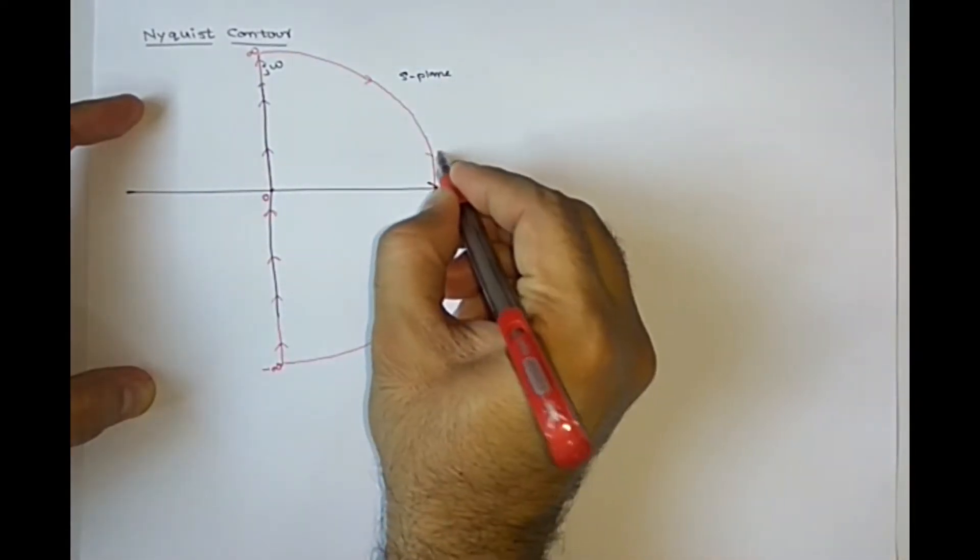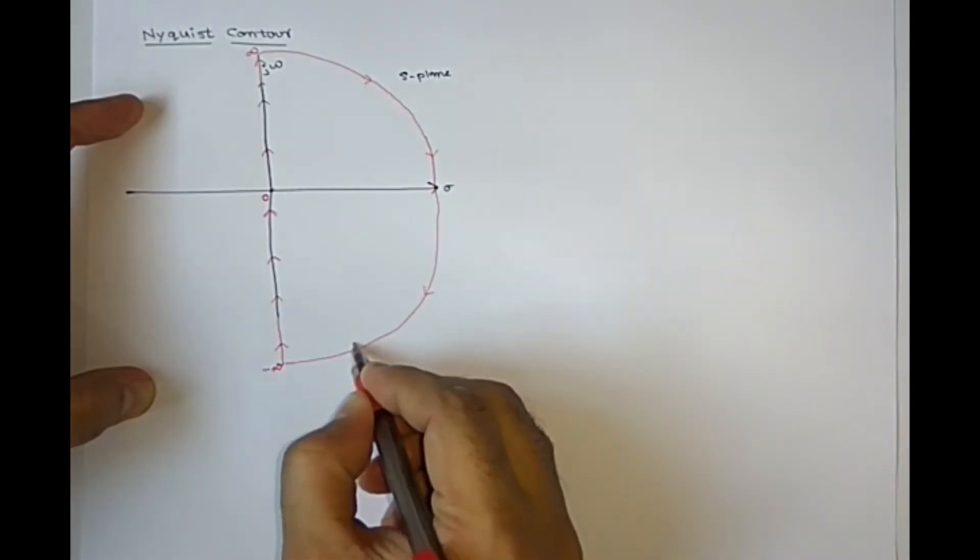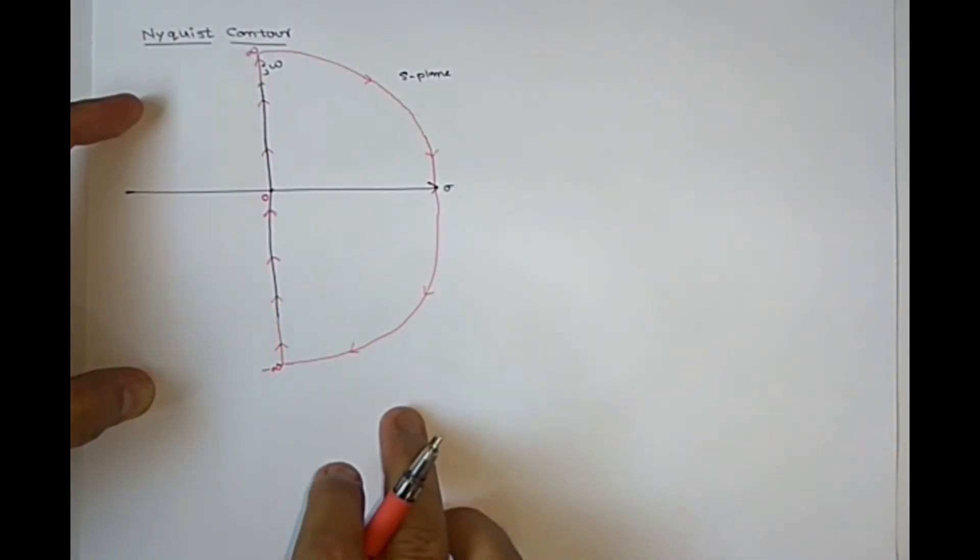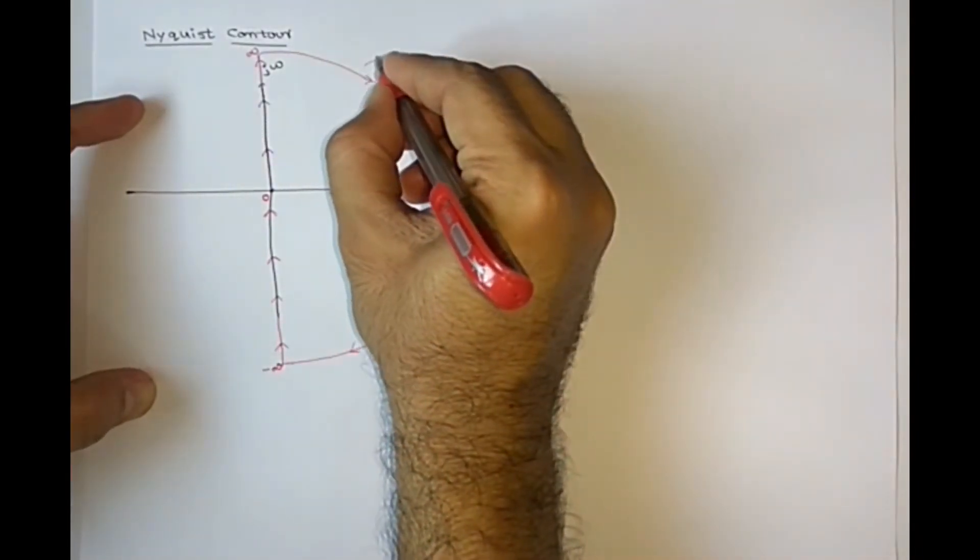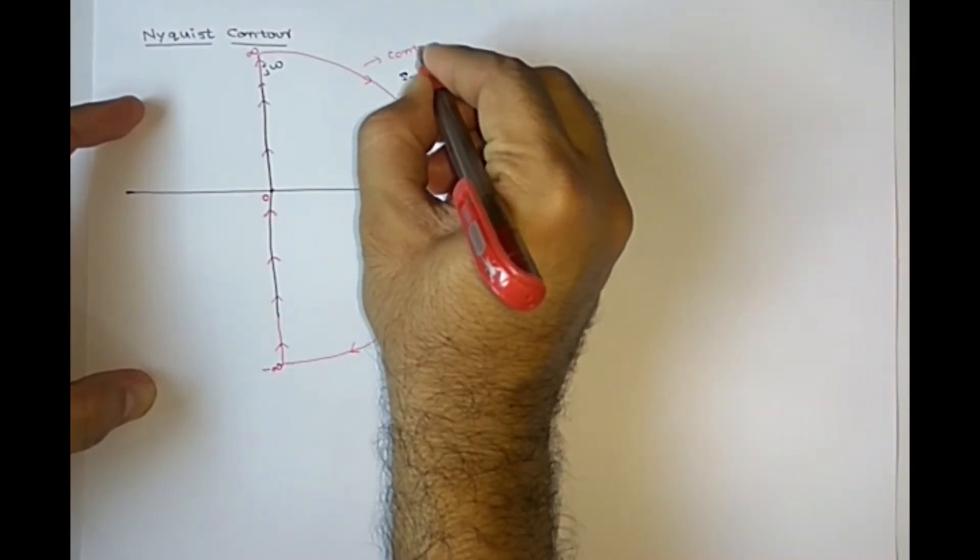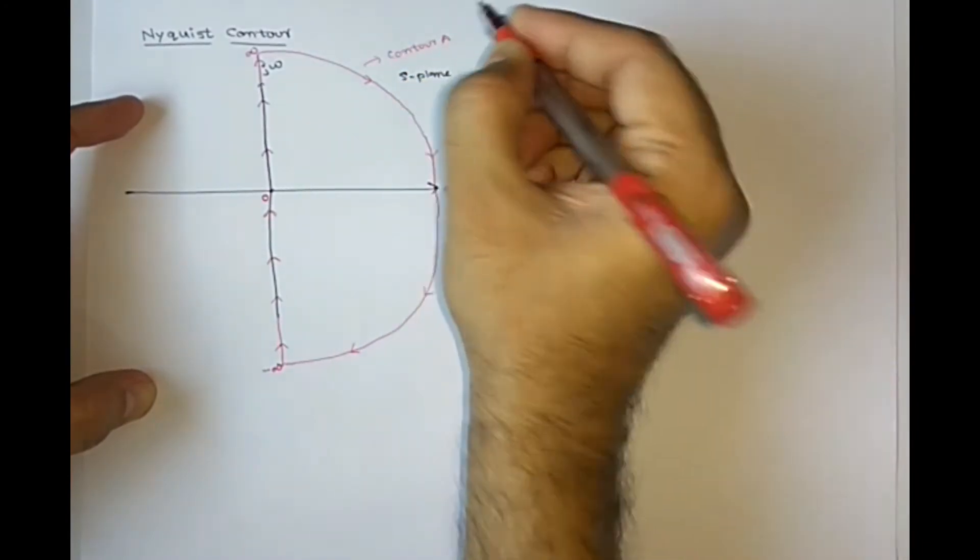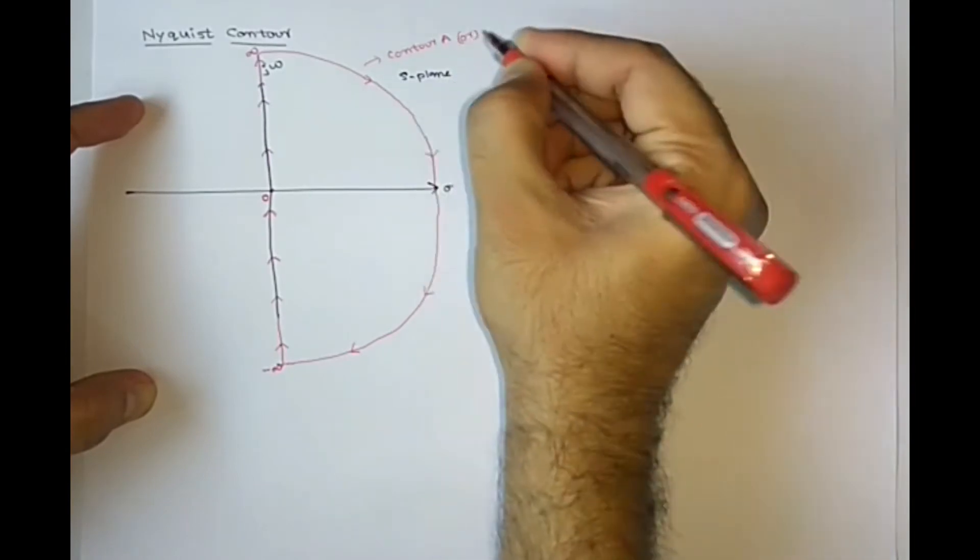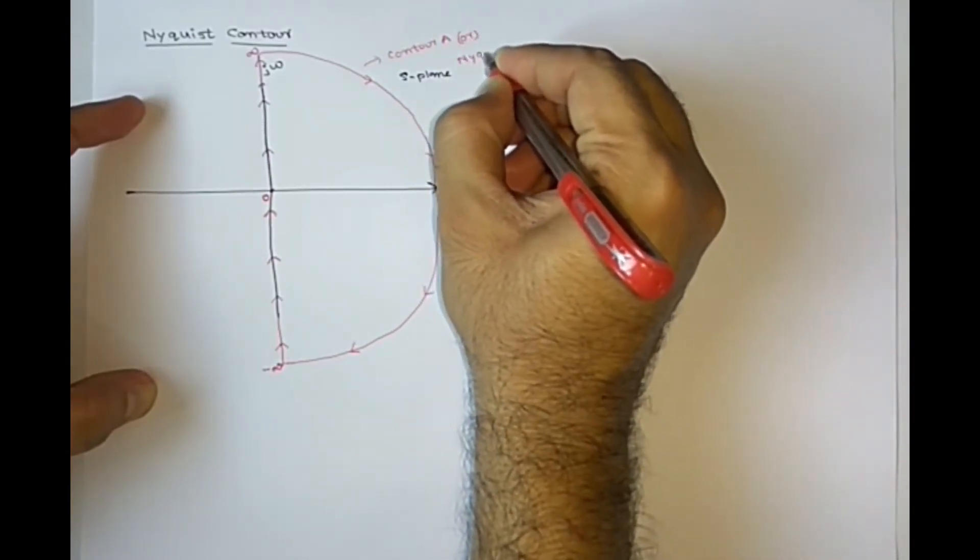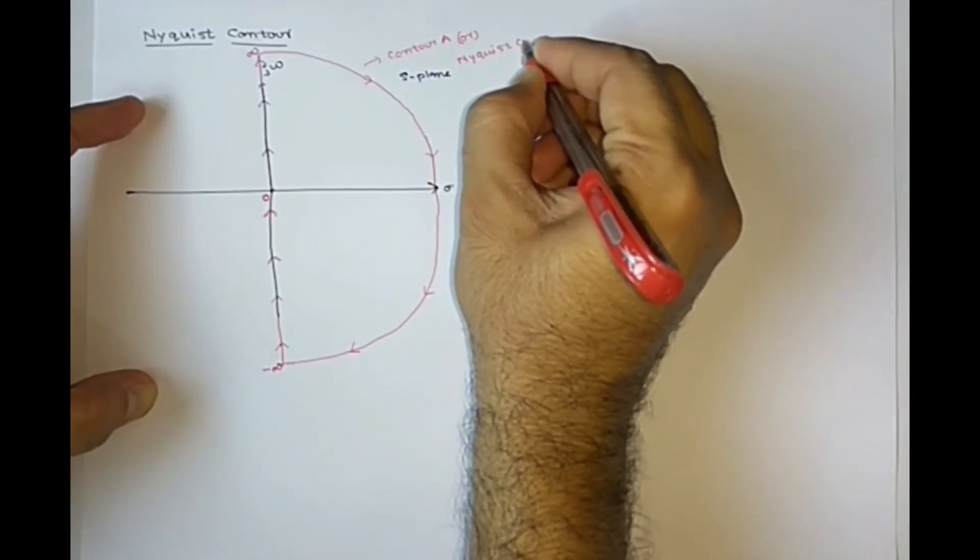So clockwise direction, you need to travel. This is a Nyquist contour, or contour A, or also called Nyquist contour.